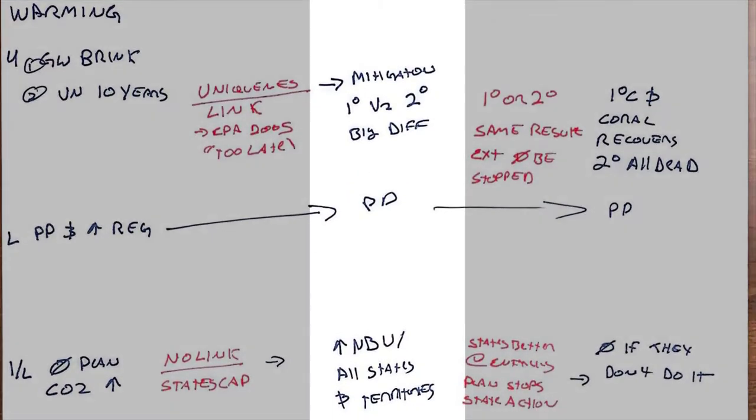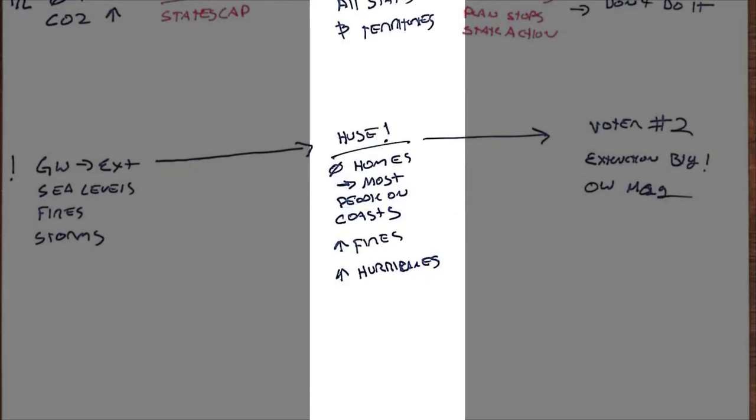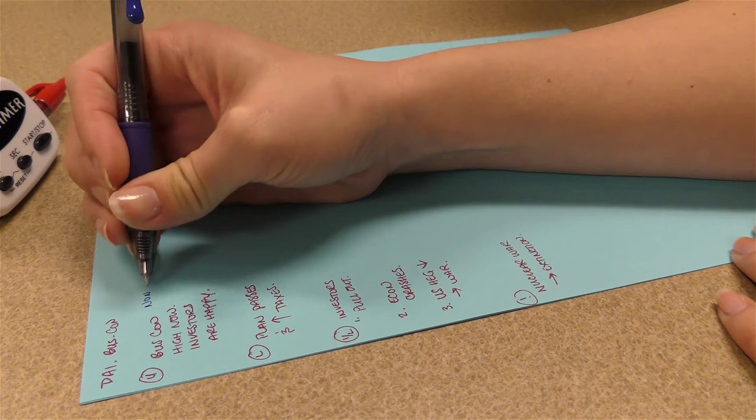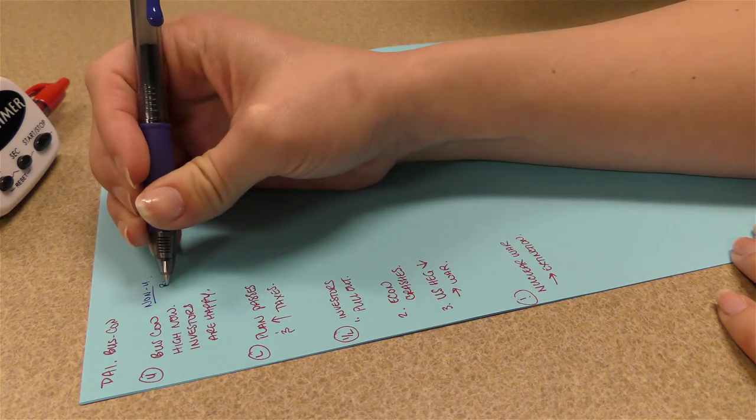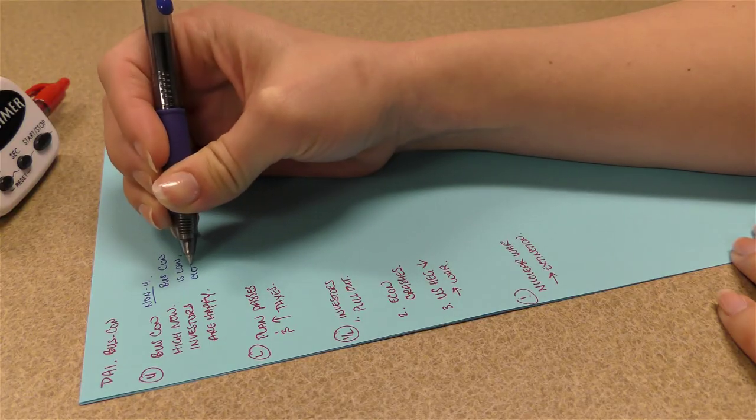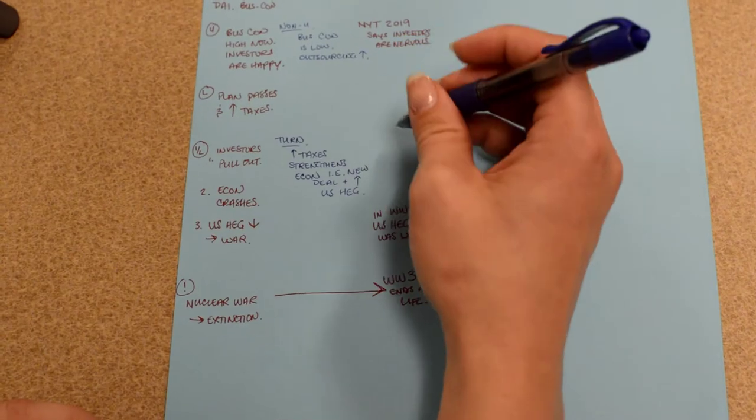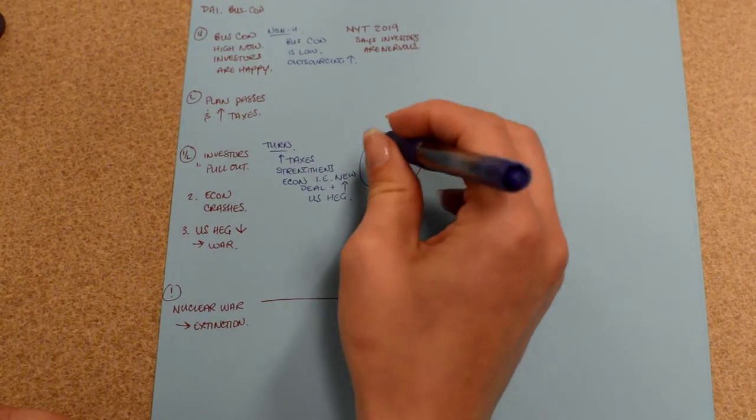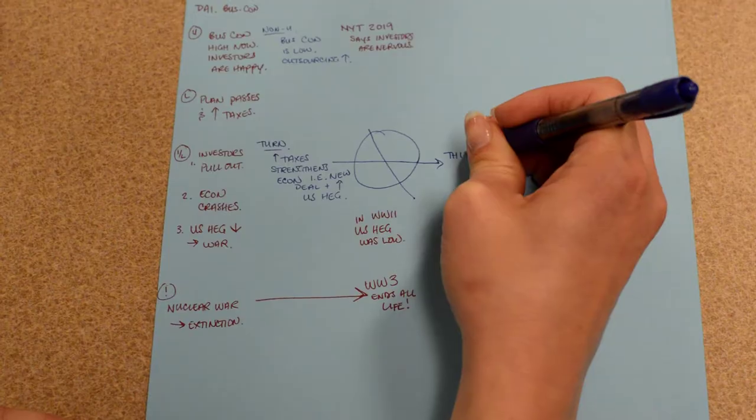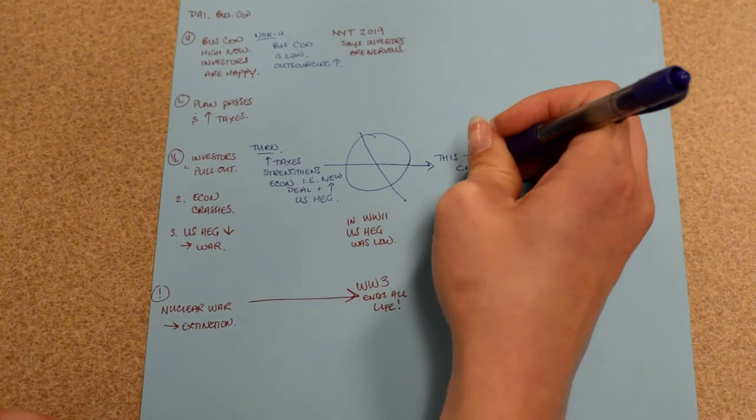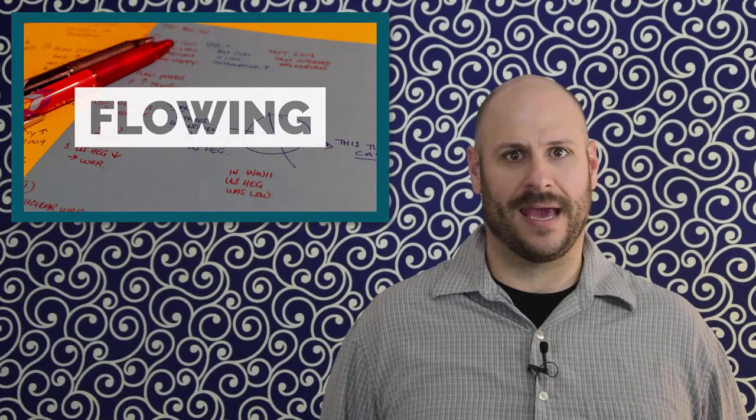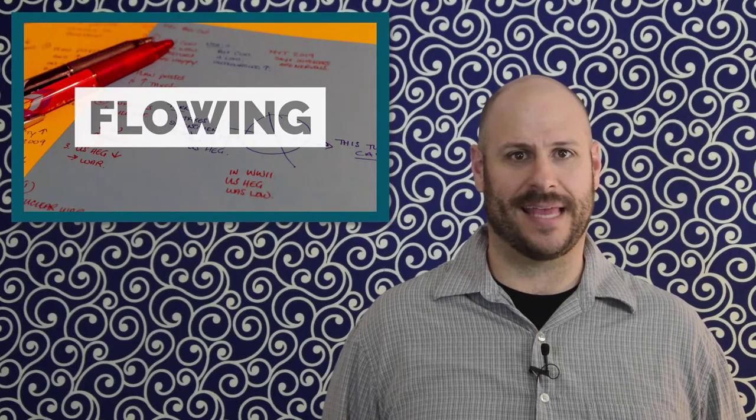In the third speech of the debate, you will flow the arguments of the affirmative in the third column. When they refute the 1NC arguments, directly align their arguments next to the ones that they are refuting. Each new argument goes in a fresh row. If they point out any arguments from the 1AC that the 1NC did not answer, draw an arrow from where that argument is written on the 1AC's column to the same row of the 2AC's column. You will continue this process for each speech of the debate, going to the next column and lining up the arguments next to the argument they answer.